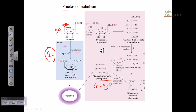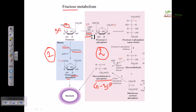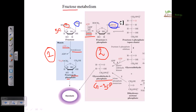Now let us look at the complex pathway. Here, fructose is converted into fructose-1-phosphate instead of fructose-6-phosphate. We need a kinase, but the enzyme here is called fructokinase, not hexokinase. The mechanism is similar, but fructokinase attaches the phosphate group at the first carbon position instead of the sixth carbon position. After attachment of the phosphate at the first carbon position, it produces fructose-1-phosphate.